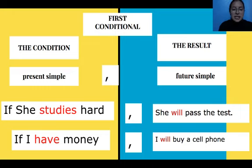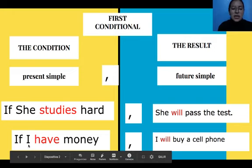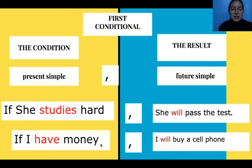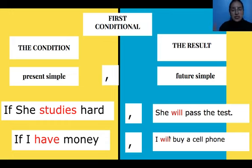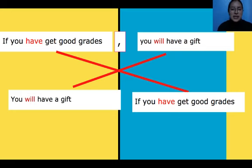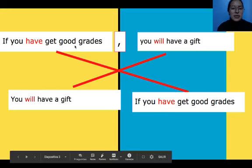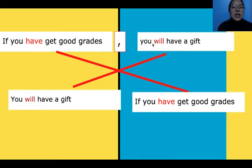'If you study hard, you will pass the test.' In this case: 'If I have money, I will buy a cell phone. But if I don't have money, I won't buy a new cell phone.' The negative of 'will' is 'won't,' or 'will not' in full form. Another example: 'If you get good grades, comma, you will have a gift.'